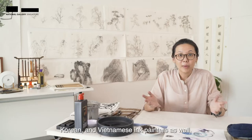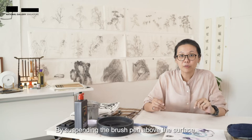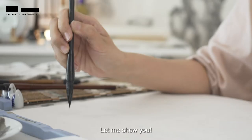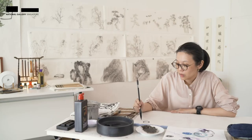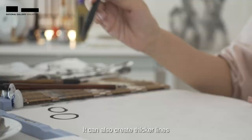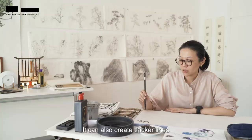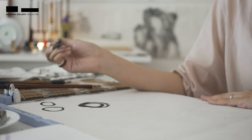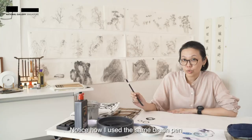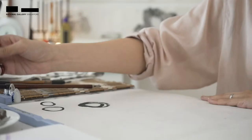By suspending the brush pen above the surface, the tip can be turned all 360 degrees to create different marks on the surface. Let me show you. The brush pen can create thin lines. It can also create thicker lines if it's pressed down more onto the surface. Notice how I use the same brush pen to create the different effects?